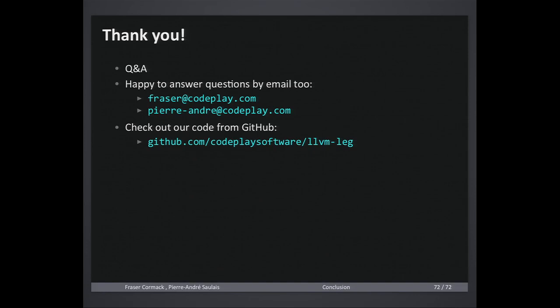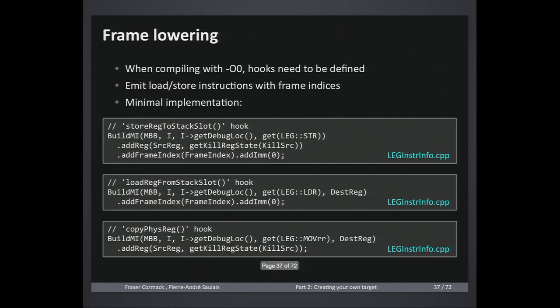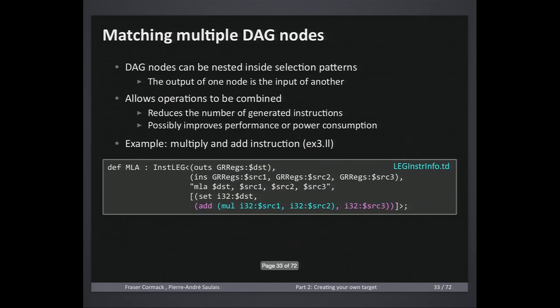Question: digging through comments in TD files, I got the impression that TableGen might support matching different patterns to the same instruction. Is that really possible? Response: As far as I'm aware, it'll probably try and match as many nodes as it can at once. If it fails that, then it'll try fewer nodes — it tries to match as many nodes as possible and if it doesn't, it matches fewer nodes.